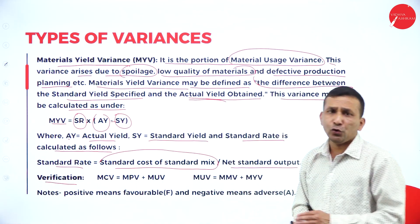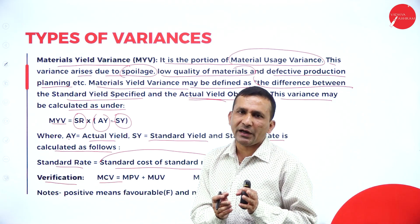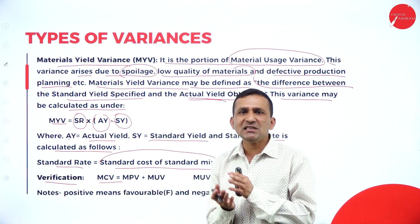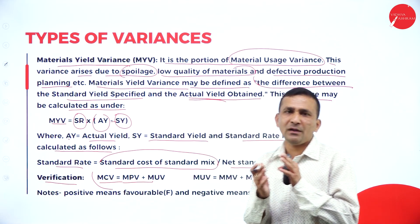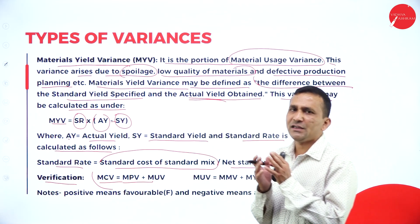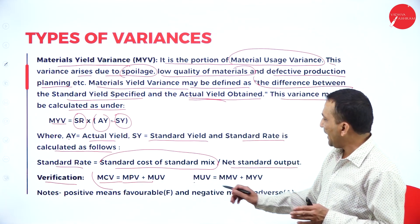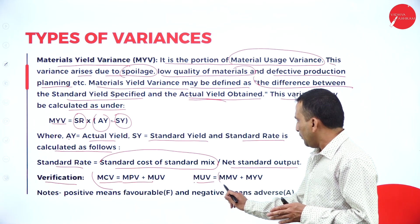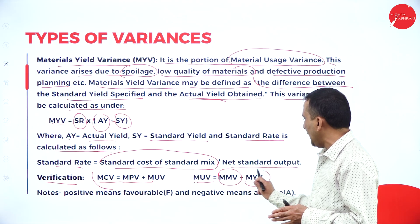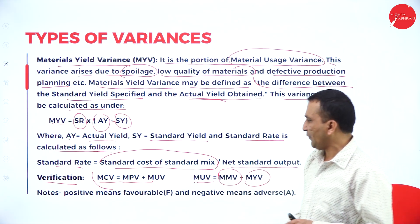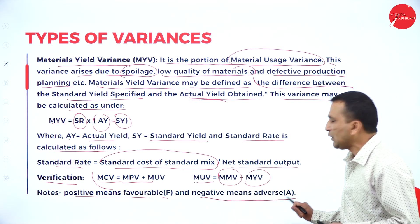To verify: Material Cost Variance = Material Price Variance + Material Usage Variance. If the result is favorable, we write F; if negative, we write A (adverse). To verify Material Usage Variance: Material Usage Variance = Material Mix Variance + Material Yield Variance. Positive means favorable and negative means adverse.